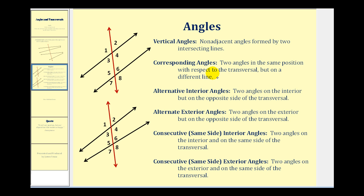Corresponding angles are two angles in the same position with respect to the transversal, but on a different line. So looking at this diagram, notice that angle two can be thought of as the angle in the upper right-hand corner of the intersection of the transversal and this first line. And angle six is also in the upper right-hand corner of the intersection of the red and lower black line. So angles two and six are corresponding angles.